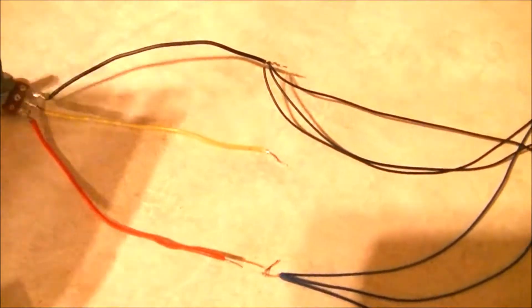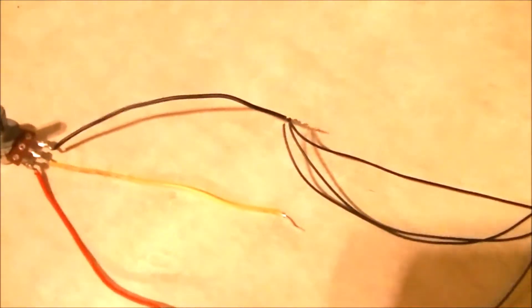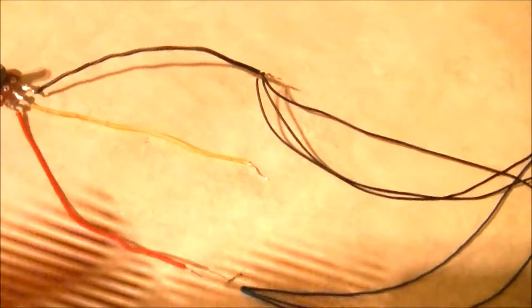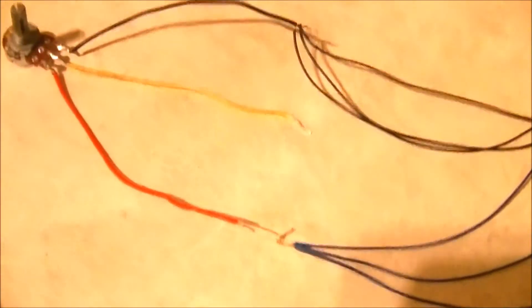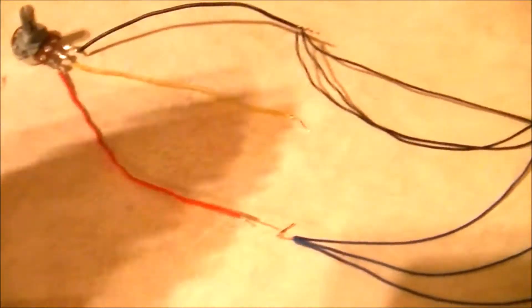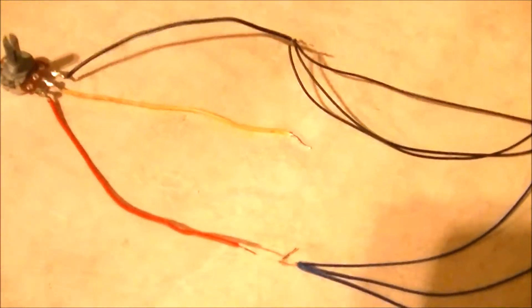As you twist and turn the knob on this potentiometer, you're changing the value of the resistance inside. By changing the resistance, you're changing the voltage via Ohm's law.